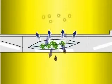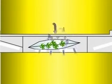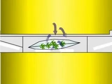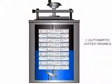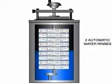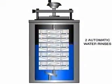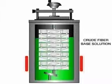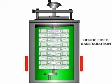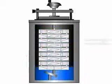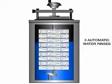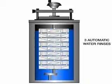During a crude fiber analysis, the A2000 automatically follows the acid step with a series of hot water rinses before moving to the base step. A final series of hot water rinses are automatically performed, completing the process.